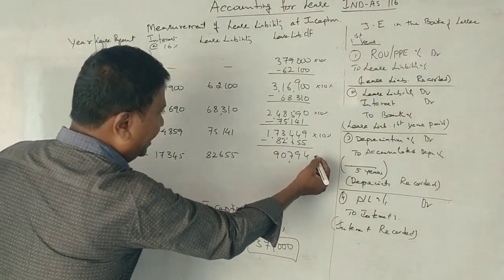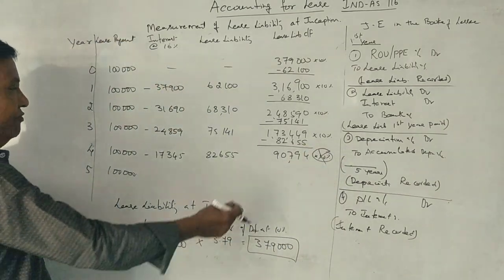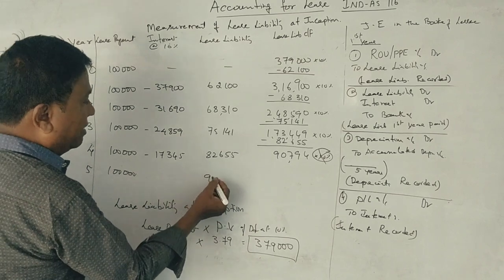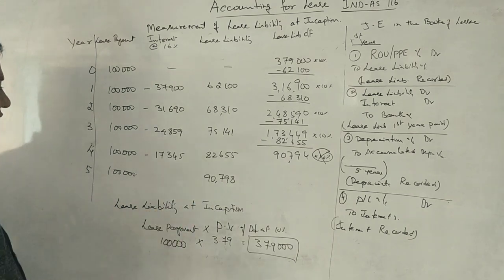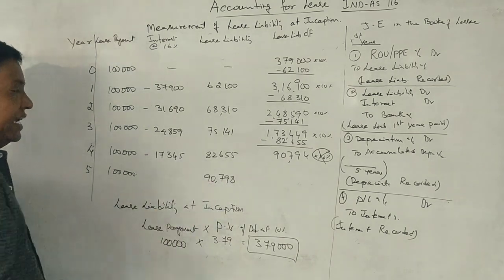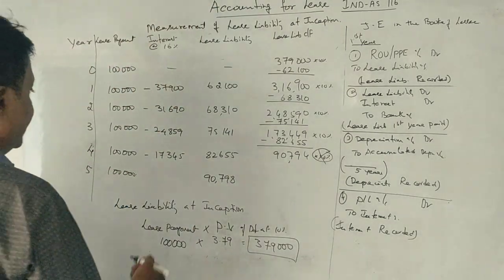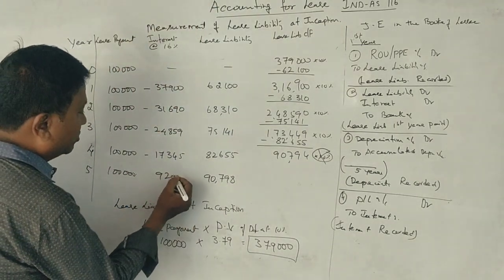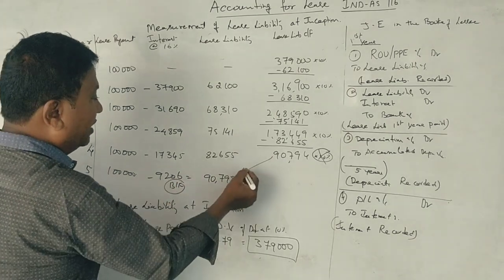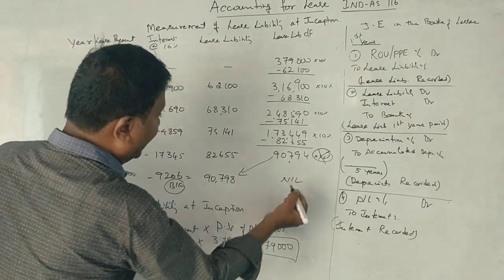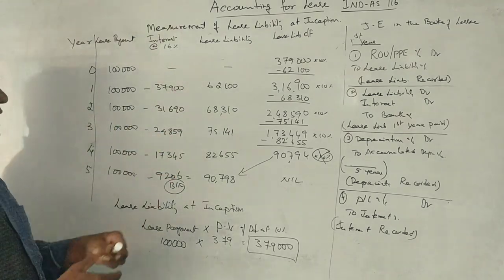What amount is the end of the fourth year? What amount is the beginning? End of the year and the fifth year. That's why 1,00,000 minus 90,798 gives 9,206. This is the balancing figure. This is the value. That's 1,00,000 minus 90,794. This, for the lease liability.